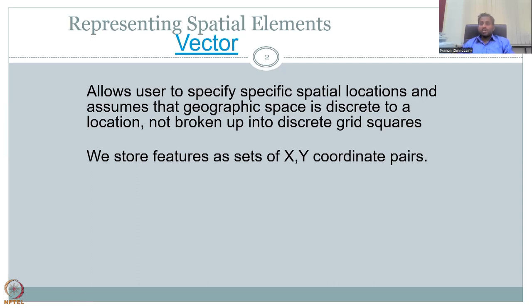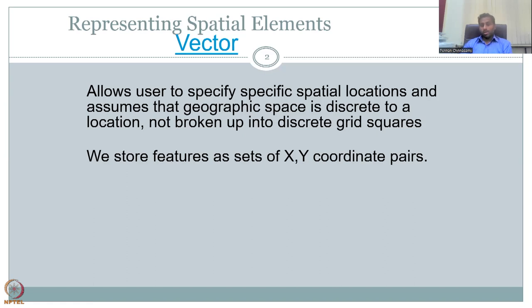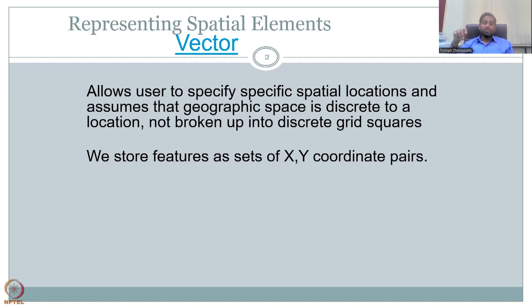In GIS, there is always a spatial location associated with the data. We have already discussed this while we did GIS. In the vector format, the data is stored as features, as sets of XY coordinate pairs. GIS assumes that geographic space is discrete to a location, not broken up into discrete grid squares like raster. Here, discrete means it is specific to a location. XY coordinate is not going to be the same for each point.